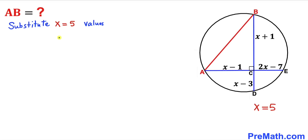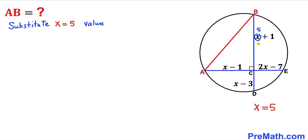Let's substitute x equal to 5 into all of these expressions. Replacing x with 5 in x plus 1 gives us 6. Replacing x with 5 in x minus 1 gives us 4. Replacing x with 5 in 2x minus 7 gives us 3. And finally, replacing x with 5 in x minus 3 gives us 2.